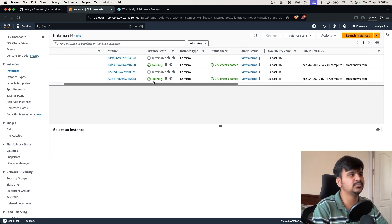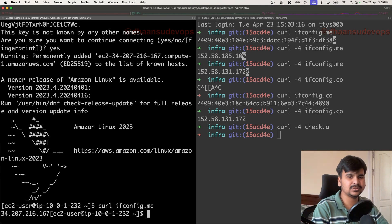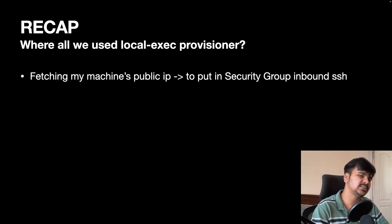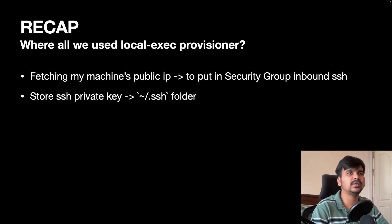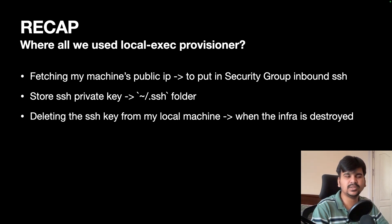Let's get back to the slides for a quick recap. We used the local-exec provisioner in two places: first, to fetch the machine's public IP and put it in the security group inbound SSH rule; second, to store the SSH private key into the .ssh folder on my machine. Both times we ran the local-exec provisioner for my local machine. There is also a remote-exec provisioner but I didn't have a use case for it. We also used local-exec at destroy time to delete the SSH key from my local machine when the infrastructure is destroyed.